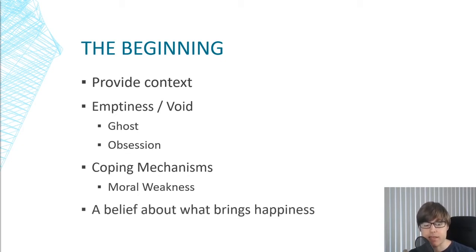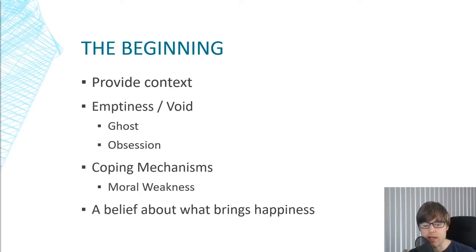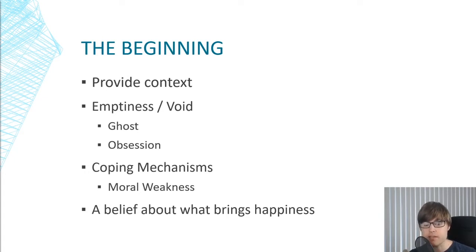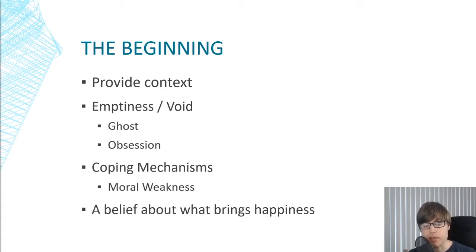A character can also have a belief about what will bring them happiness, and typically this belief is actually wrong. The character might believe, 'I will be happy if I win the approval of this person,' or 'I will be happy when I get a promotion at my job.' But they need to come to realize that their happiness typically comes from within — from their own value and being able to accept themselves. In the beginning of the story, we want to provide this context subtly through action so the audience can understand the context around the character's change.